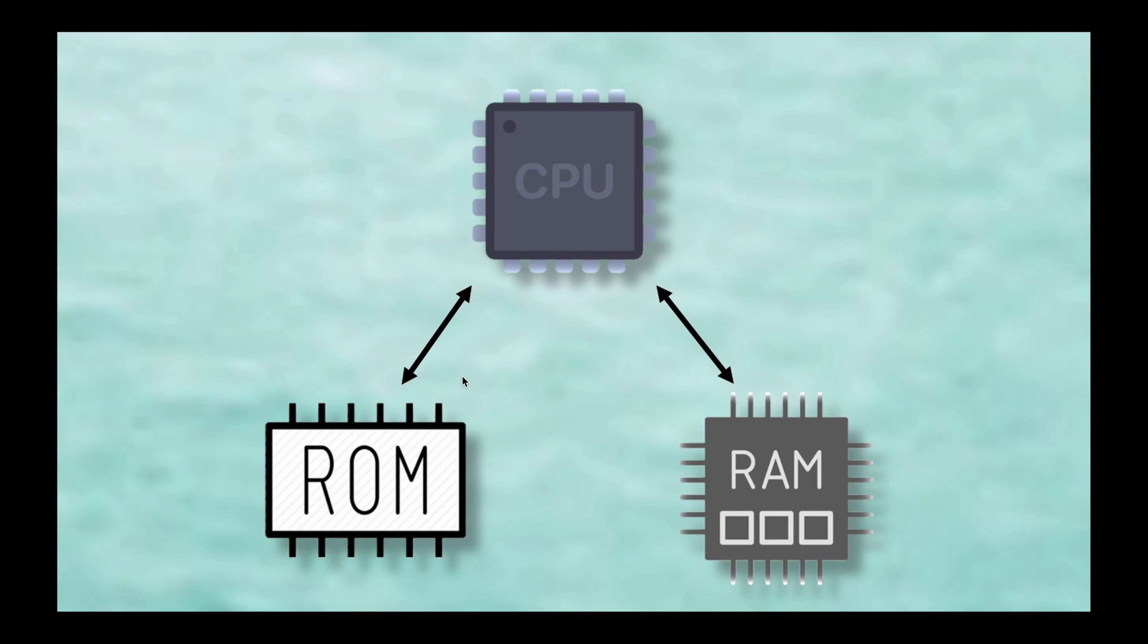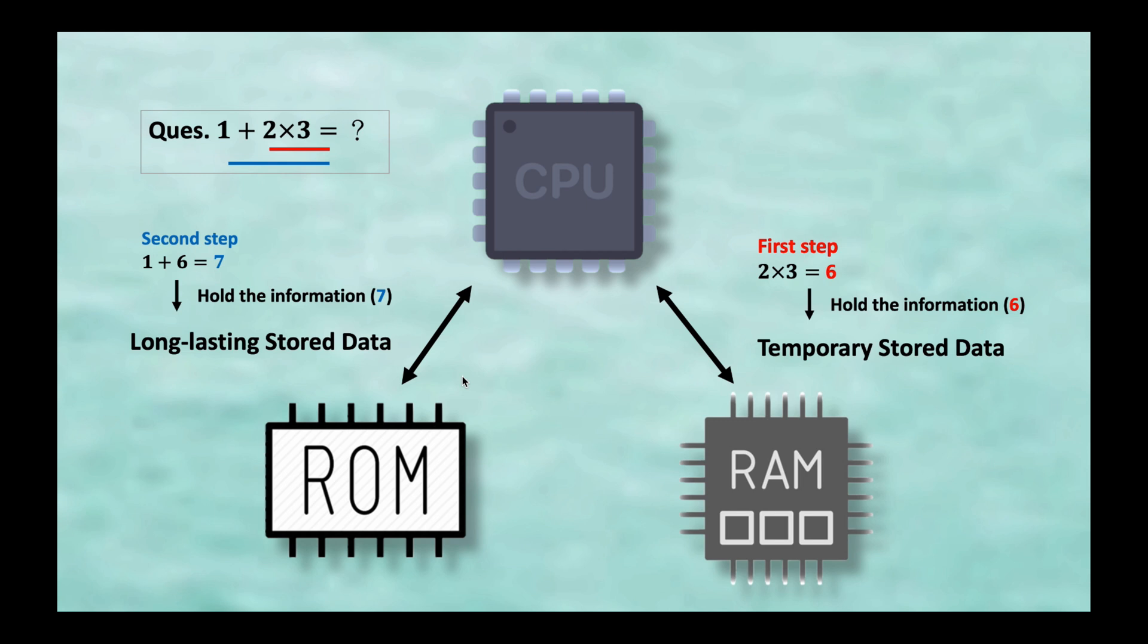Second, to make you know the importance of RAM, let's take a look. For instance, to solve this simple question, first, we do the multiply, and the resources we store in RAM. Then, we do the addition in CPU. Then, store the final result 7 to the ROM as long-lasting information.